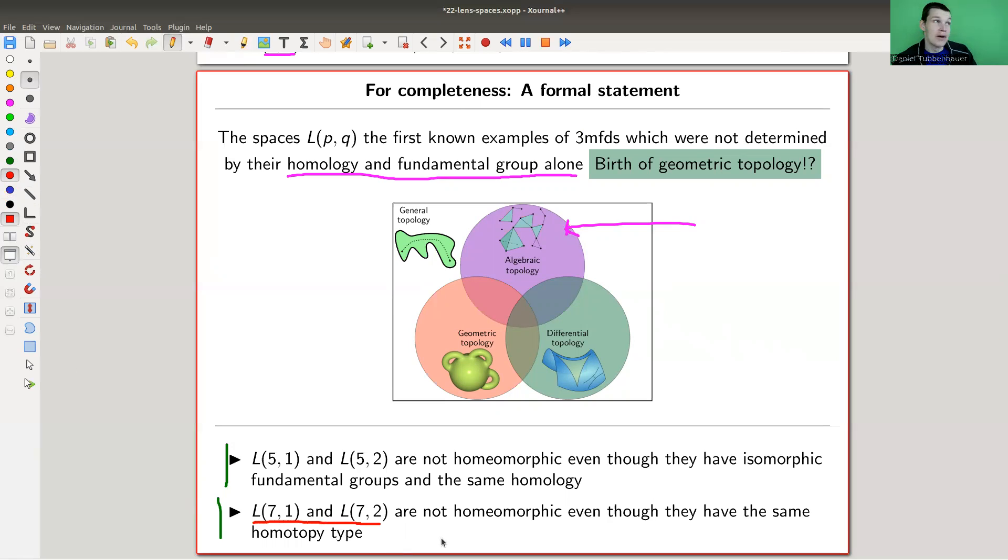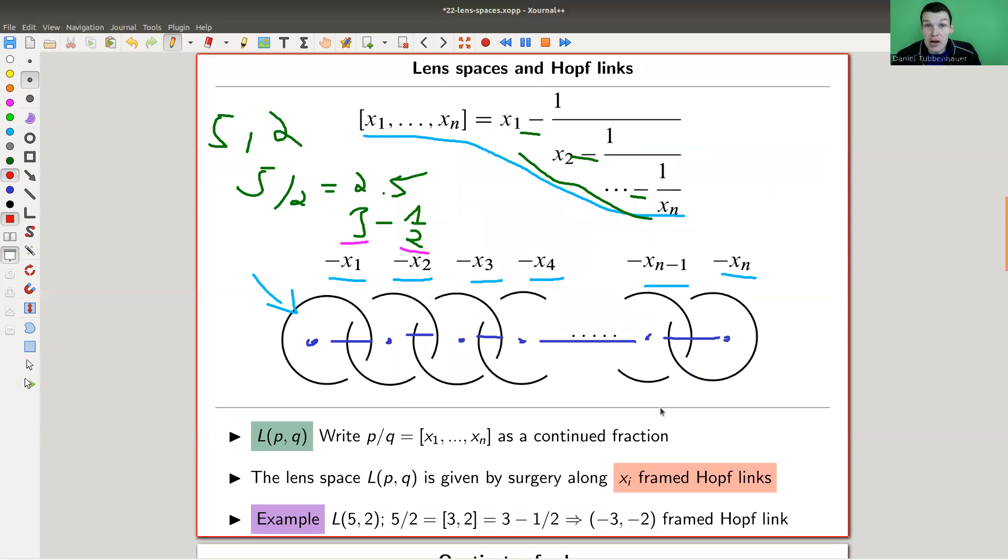It gets even worse. L(7,1) and L(7,2) have even the same homotopy type, and homotopy is one of the crucial notions that make algebraic topology tick. Essentially, algebraic topology doesn't help you to study those manifolds too much. That's why different methods needed to be pushed further to get a handle on these lens spaces.